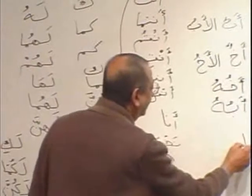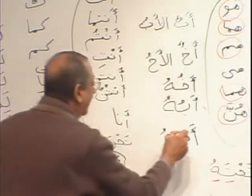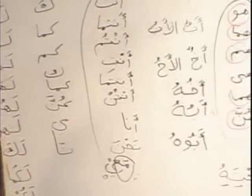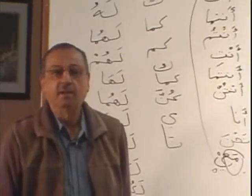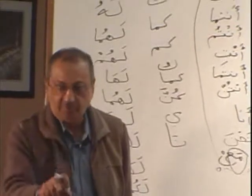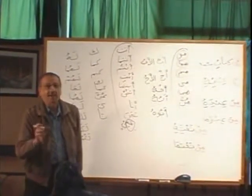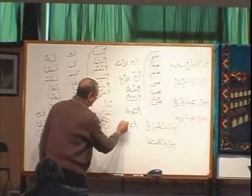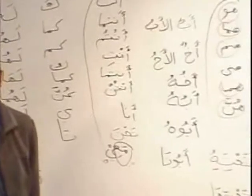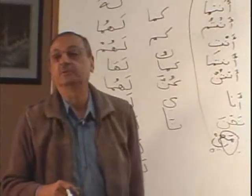They will change. Waw came out. Are you with me? So now if you want to say 'his father,' you will say abuhu. 'Her father' — abuha. 'Your father' — abuka. 'Your father' (feminine) — abuki. 'My father' — abi. In that case, ya will do the job. 'Our father' — abuna. Waw will come out. Except for ya mutakalim, in all 13 pronouns, waw will come out.